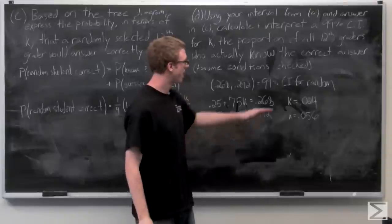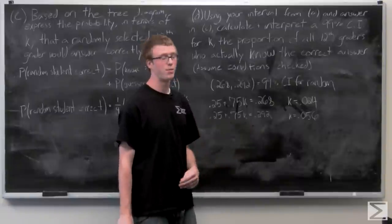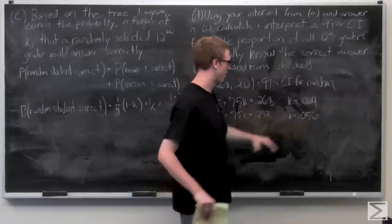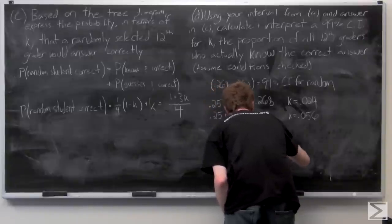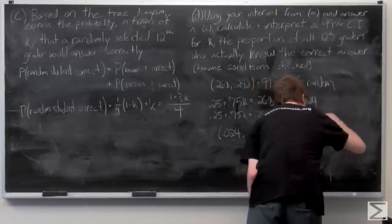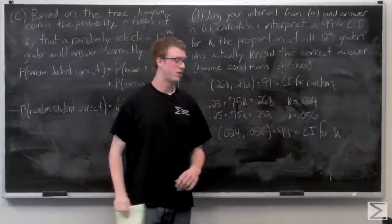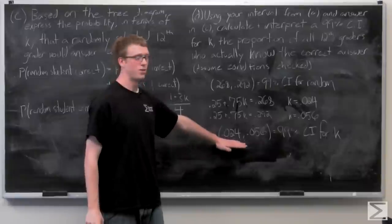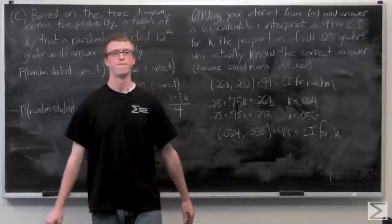We've calculated two values of K — the lower and upper bounds of our 99% confidence interval from Part A — and used them to find the lower and upper bounds of the 99% confidence interval for K. With 99% confidence, we can say that the proportion of all students who actually know the answer is between 0.024 and 0.056, or between 2.4% and 5.6%.